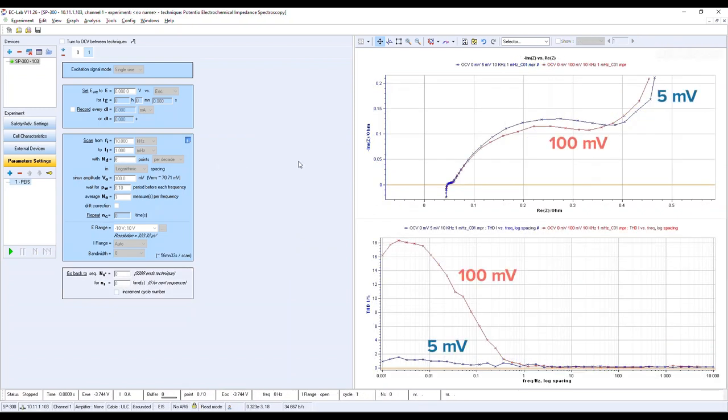A similar experiment can be done on a battery. Here we have the results of an impedance measurement of a battery at two amplitudes, 5 millivolts and 100 millivolts.